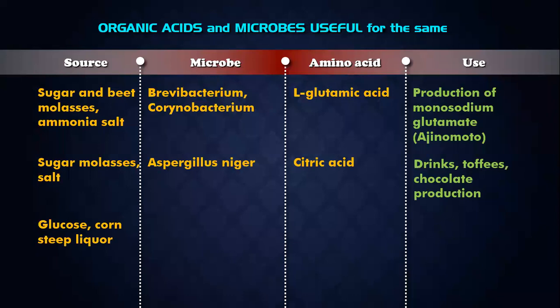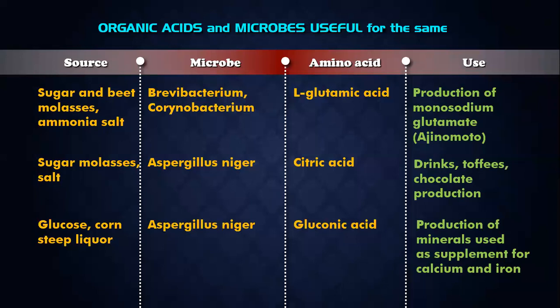Third, glucose and corn steep liquor as the source, again with Aspergillus niger. Gluconic acid is produced, which is used for production of supplements of calcium and iron — basically the mineral multivitamin and mineral tablets that you eat have gluconic acid present in them.